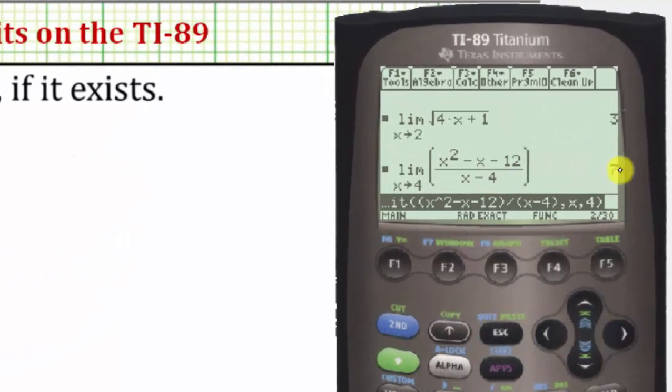This limit is equal to positive seven. To find this limit by hand, we would have to factor and simplify before performing direct substitution.